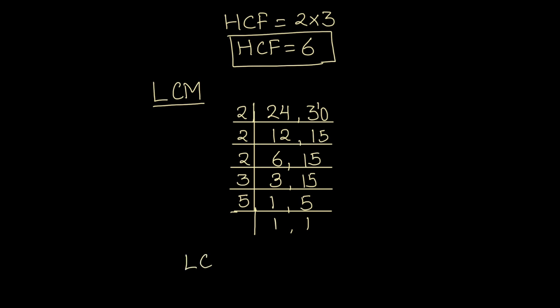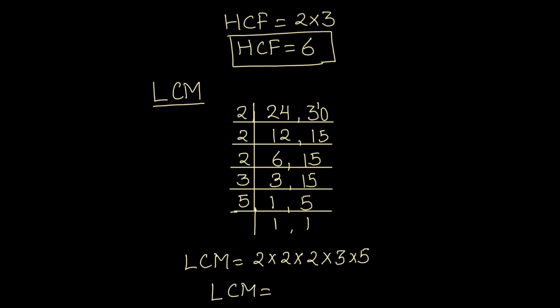For finding the LCM of the two numbers, we take the product of all the factors on the left-hand side of the ladder. So 2 × 2 × 2 × 3 × 5 is the LCM. That gives us 2 × 2 = 4, 4 × 2 = 8, 8 × 3 = 24, and 24 × 5 = 120. So the LCM of 24 and 30 is 120.